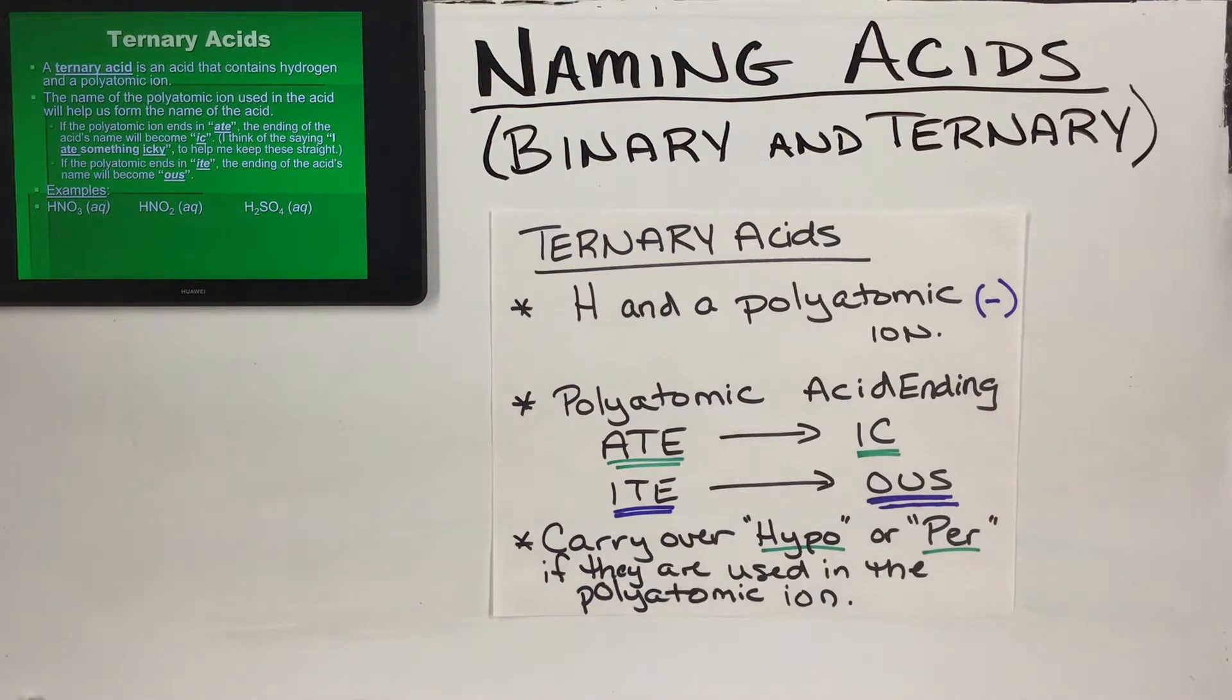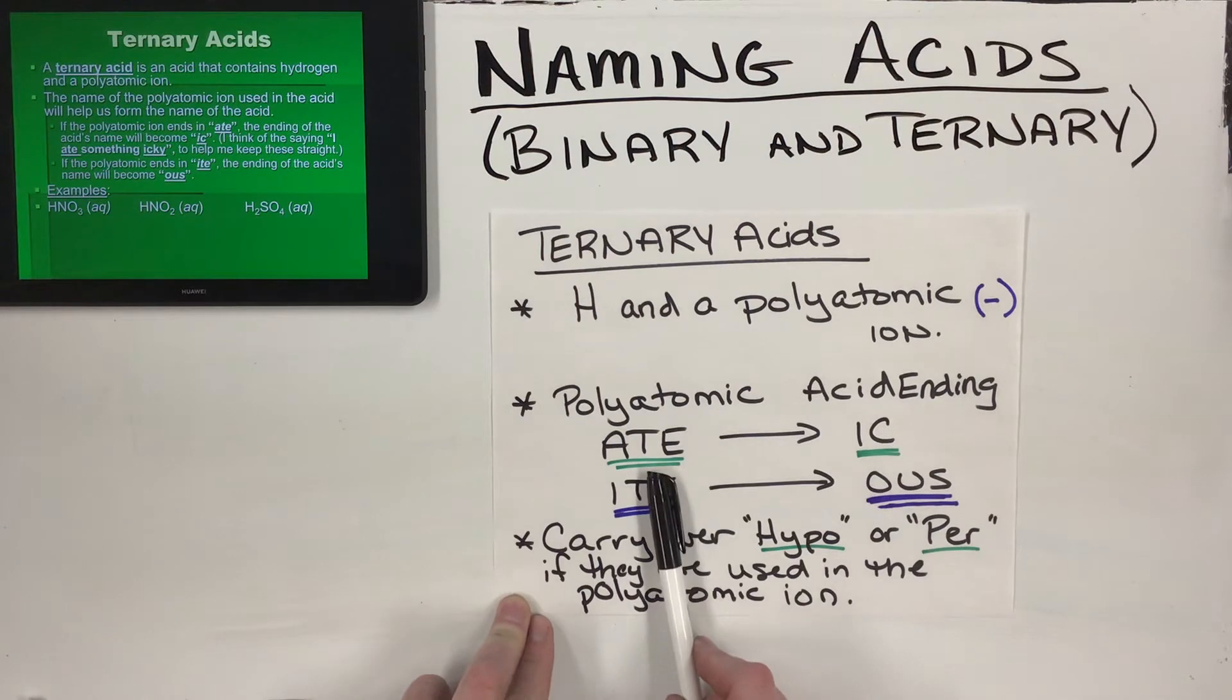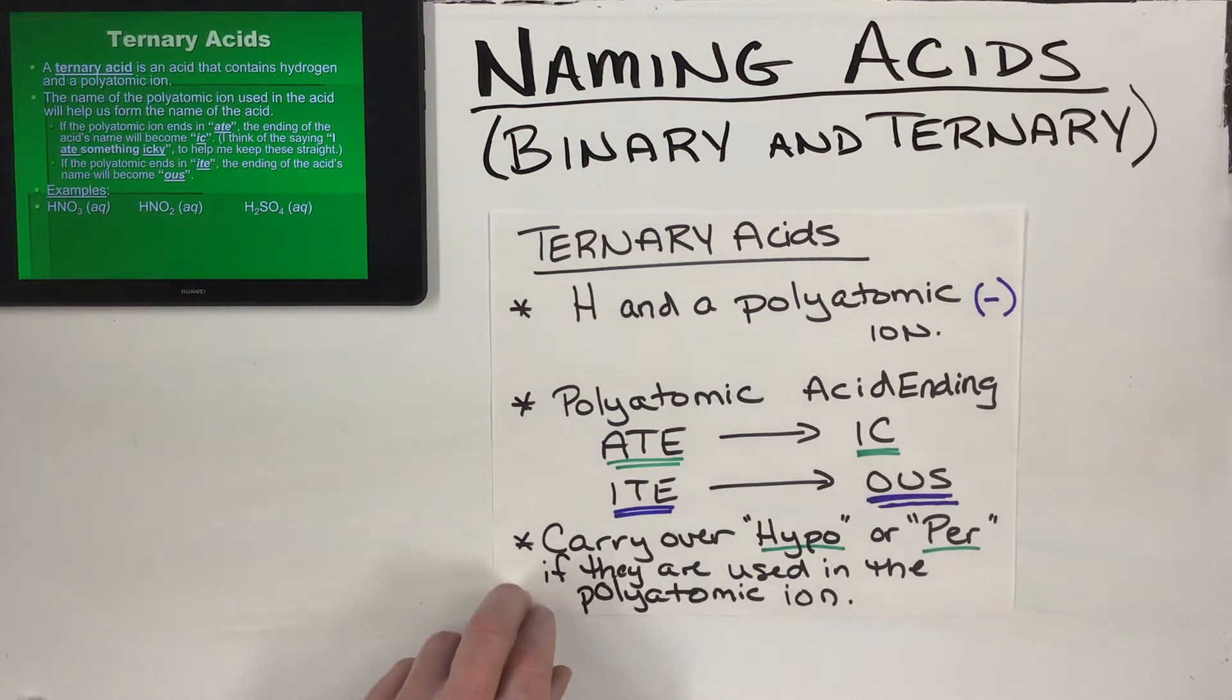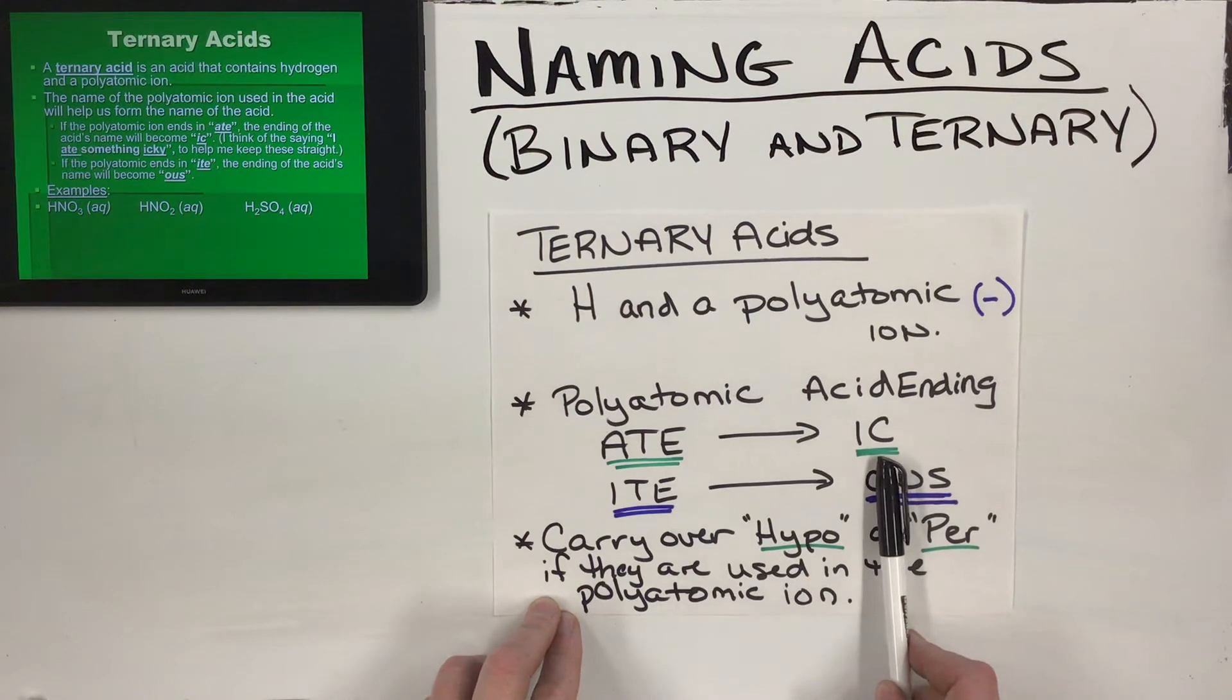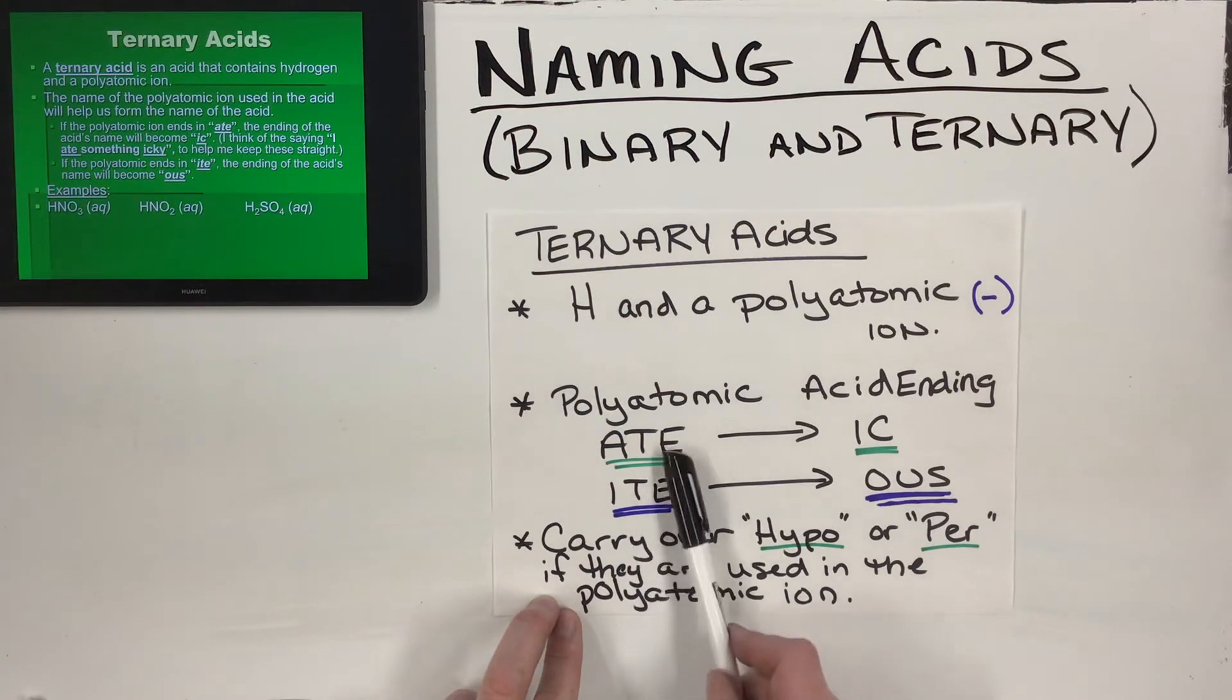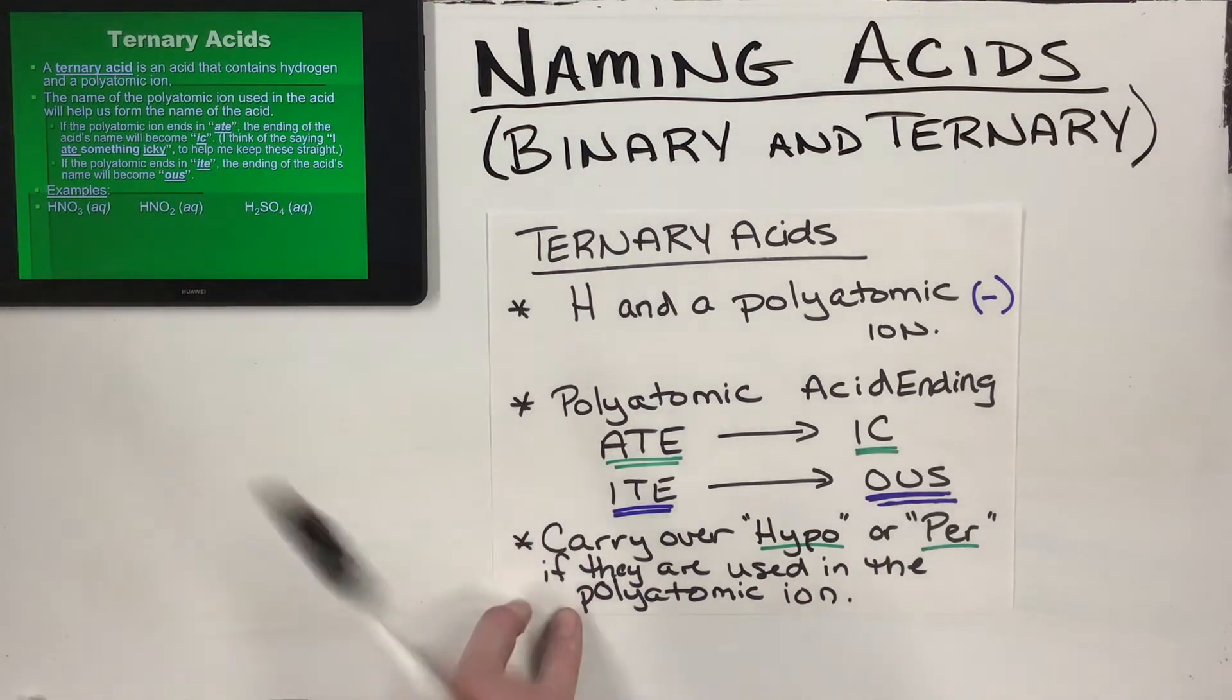This polyatomic ion is going to tell us how to name the acid. If the polyatomic ion ends in -ate, like nitrate, sulfate, carbonate, phosphate - all of those polyatomics in Nick the Camel are the -ate polyatomic forms - if it ends in -ate, the acid will end in -ic. If the polyatomic ends in -ite, and remember -ite means it has one less oxygen than the -ate form, so we had things like nitrite, sulfite, phosphite - if it ends in -ite, the acid will end in -ous. The way I remember this is: I ate something icky, and us we are ight.